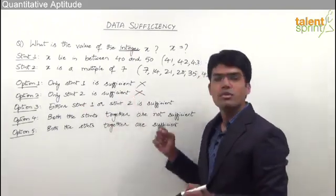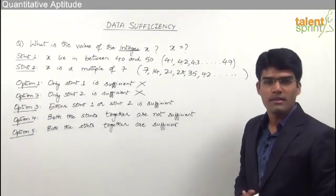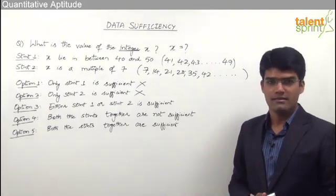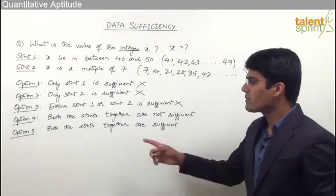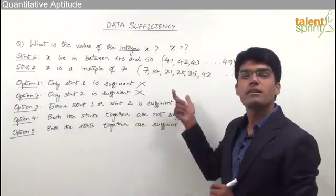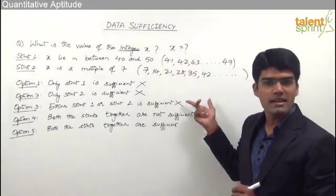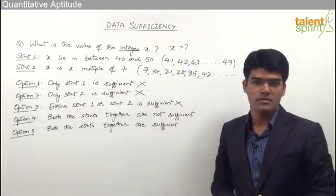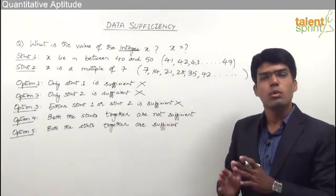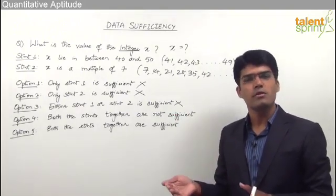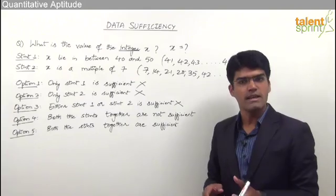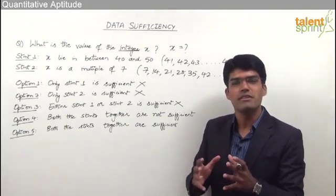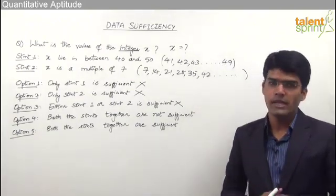So far we have understood that statement one alone or statement two alone cannot give us the answer, which means option three is also ruled out — option three requires either statement one or statement two to individually give the answer, but neither does so here. Once both statements individually have failed, we have to go for a combination of these statements — we use the data from both statements together and see if we can find a unique answer.